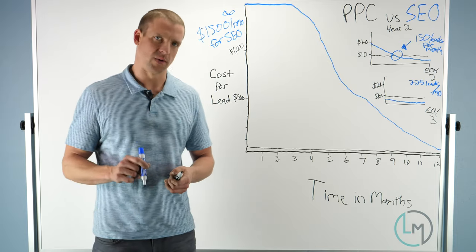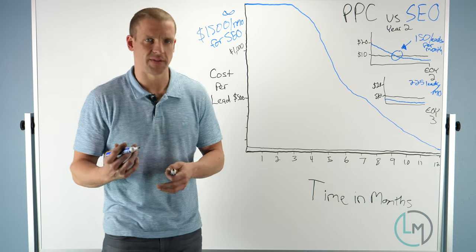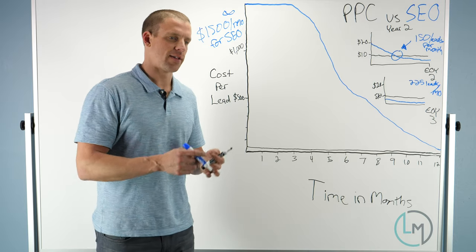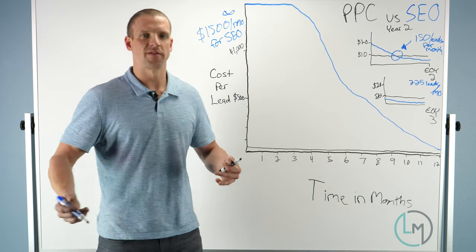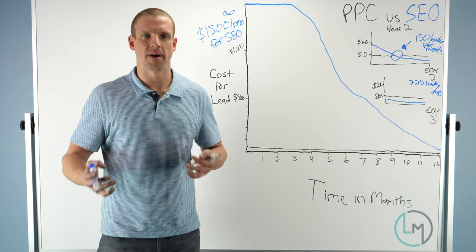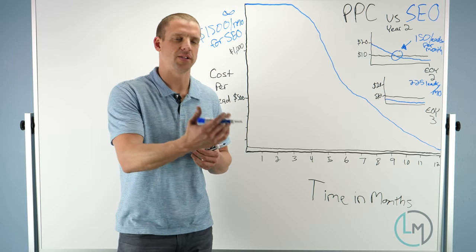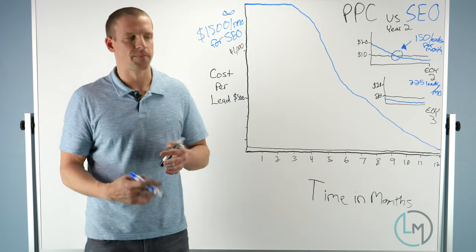A site that gets 10-15 leads a day—think about if you have to pay $10 a lead with Google Ads and your website is generating 10-15 leads a day. Really, that could be worth $100 to $150 a day. Over the course of a month, that could be worth $3,000 to $4,500 a month because those would be leads you would have to pay Google or Bing for.